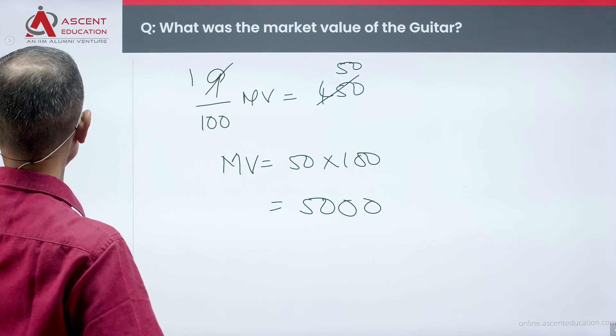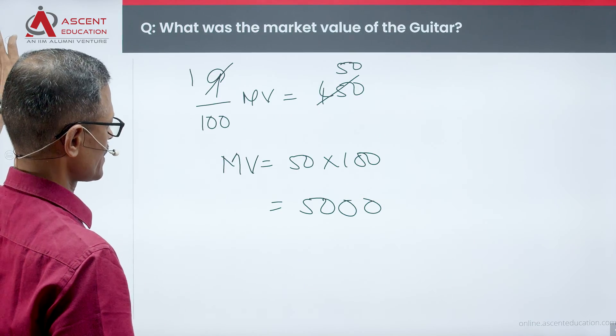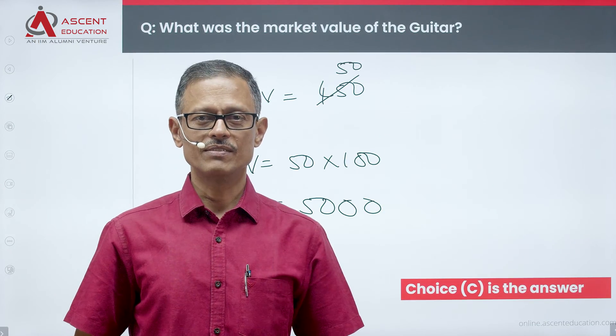Looking at the answer options, 5,000 rupees is the answer. Choice C is the correct answer to this question.